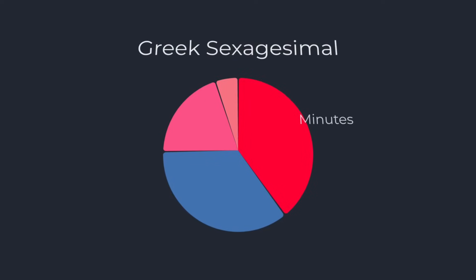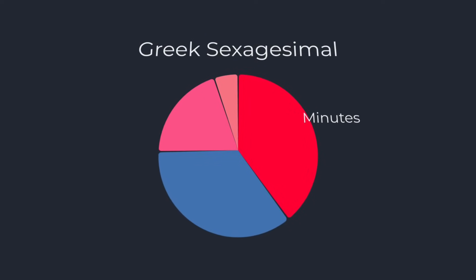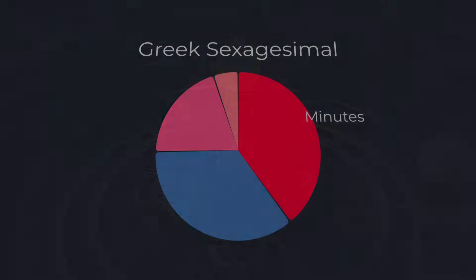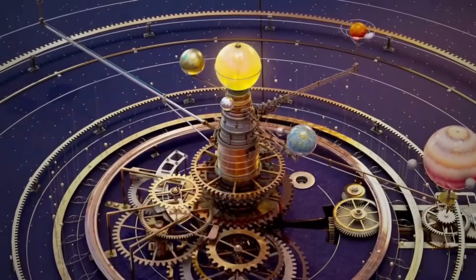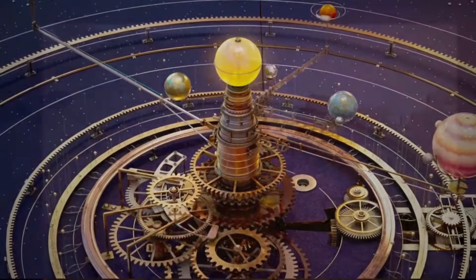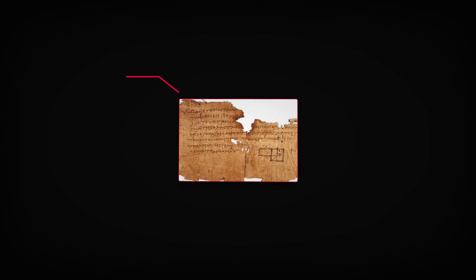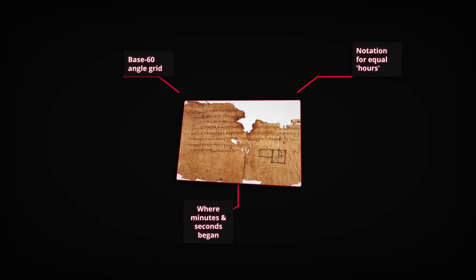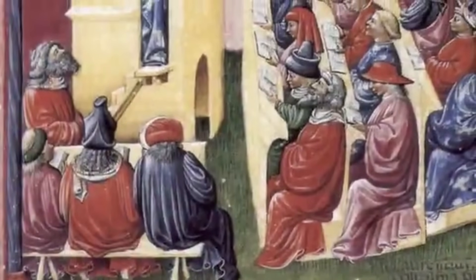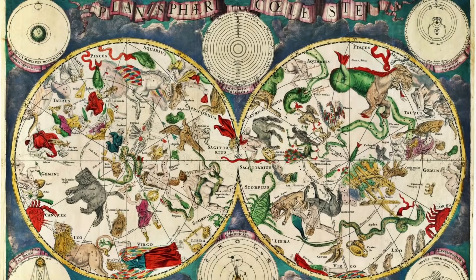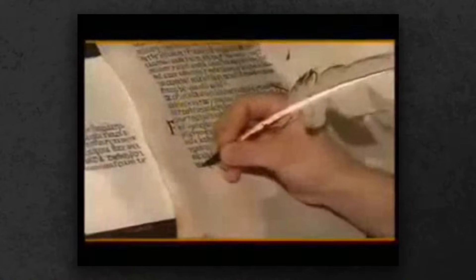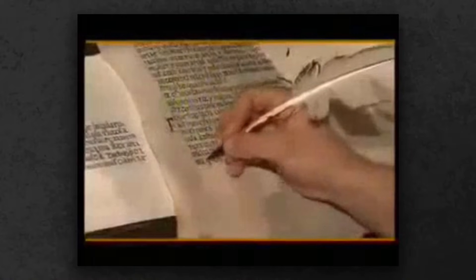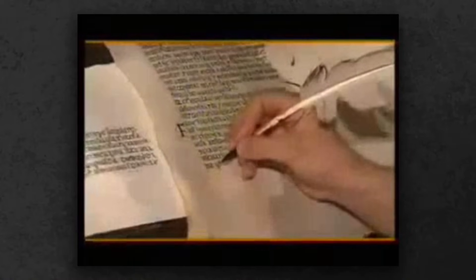The logic was simple. Keep dividing by 60, and you can reach almost any level of precision you need, whether you're tracking the path of a planet or setting the gears of a clock. These minute and second divisions started out as mathematical notations, not units of time. Greek and later Latin scholars used them to solve problems in astronomy, navigation, and geometry.